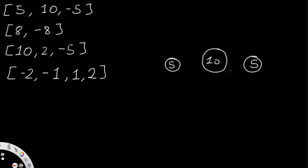These two are supposed to be the same size. Now the question is what direction are they going to be moving? This one is positive, so it moves to the right. This one is also positive, so it also moves to the right. But the negative 5 is going to move to the left.